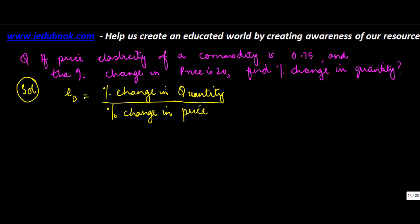So in this case, we know that price elasticity of a commodity is 0.75. So Ed is equal to 0.75, and the percentage change in price is 20, so this we know is 20.